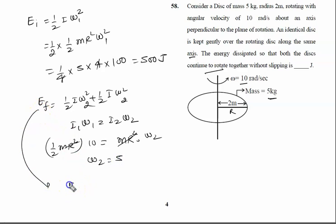So finally we will calculate final energy given by half I. I is the moment of inertia, again it is half mr square, into omega 2 square. Omega 2 square means 5 square is 25. There's again the same quantity, so we can multiply by 2.